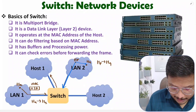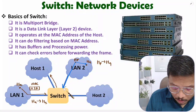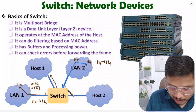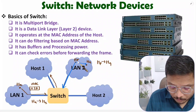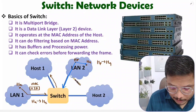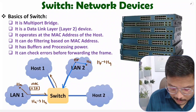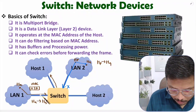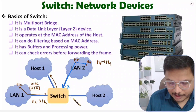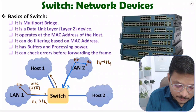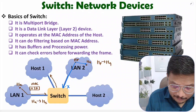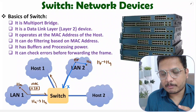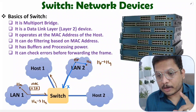The switch observes that Host P and Host Q both have MAC addresses belonging to LAN 2 only, so it will not forward this frame to any other port. This is how it does filtering — and that filtering happens based on MAC address.